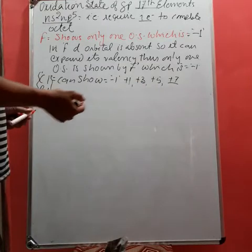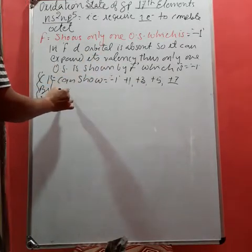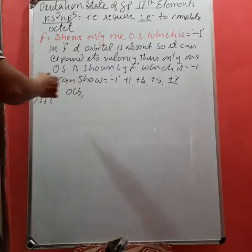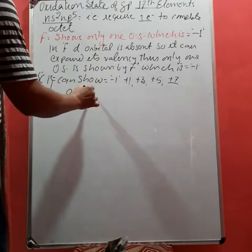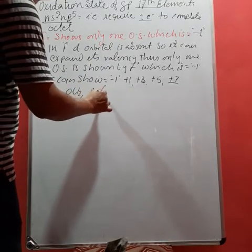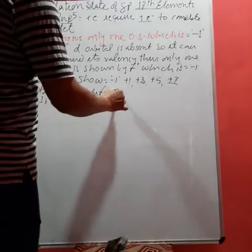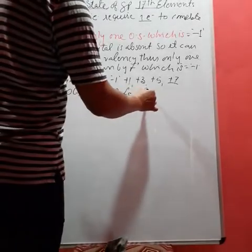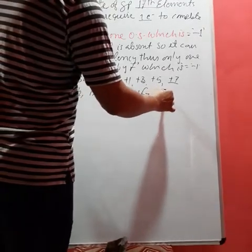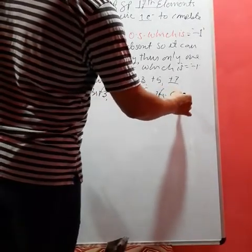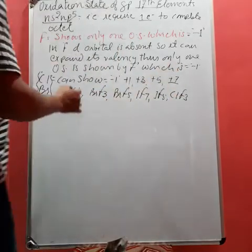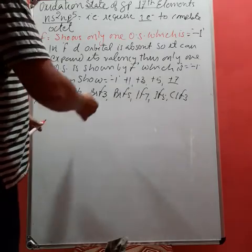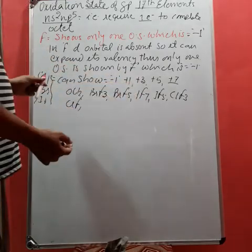We have compounds like OCl₂ or Cl₂O, BrF₃, BrF₅, IF₇, IF₅, ClF₃.